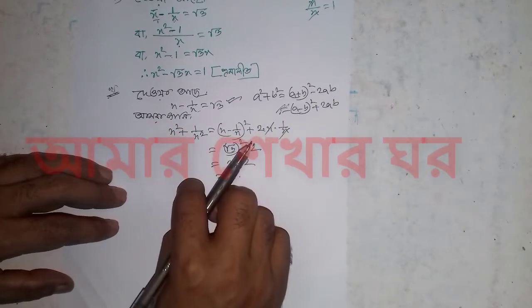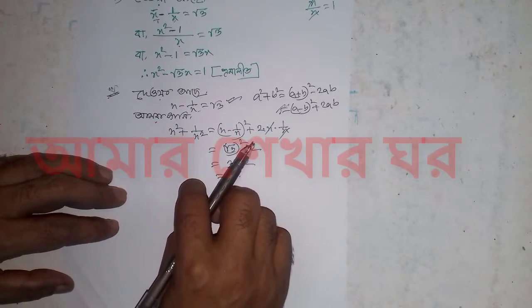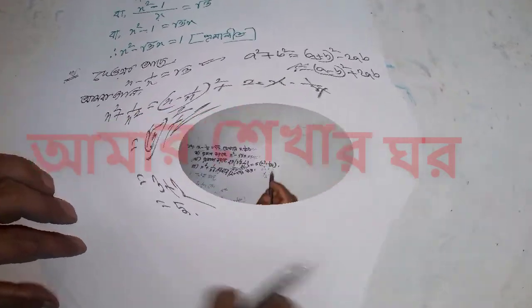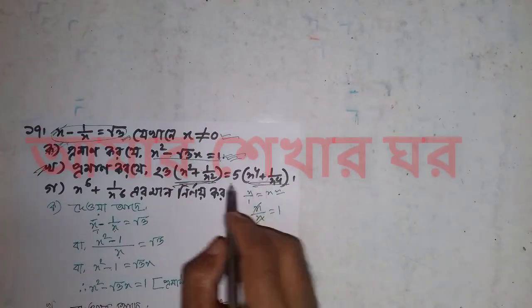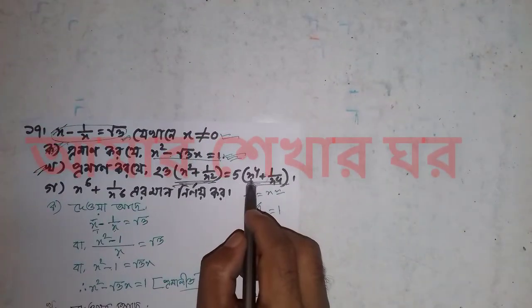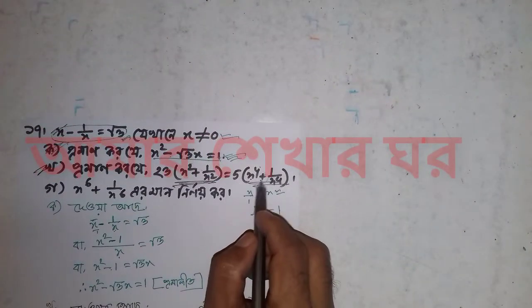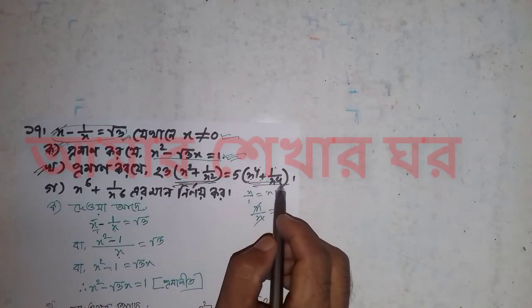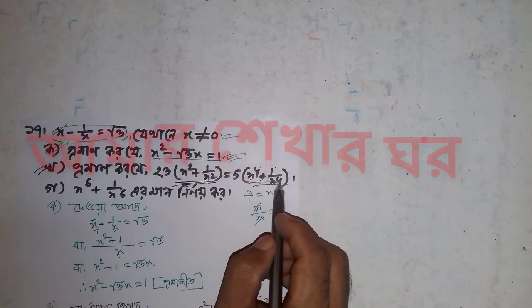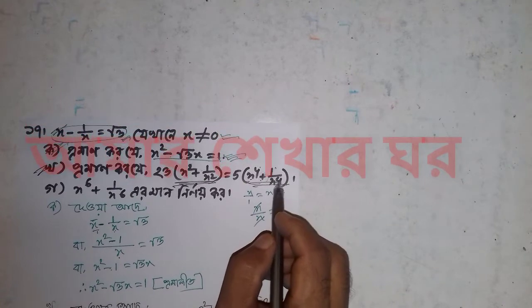x squared plus 1 by x squared equals 5. x to the power 4 plus 1 by x to the power 4 — this is the problem.